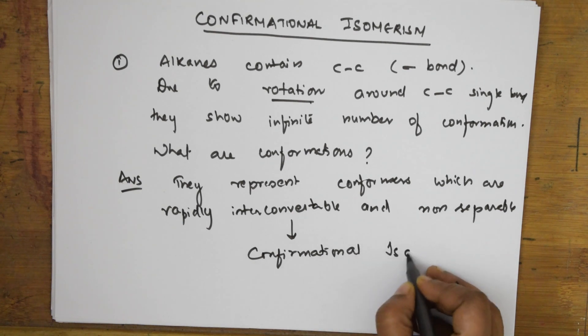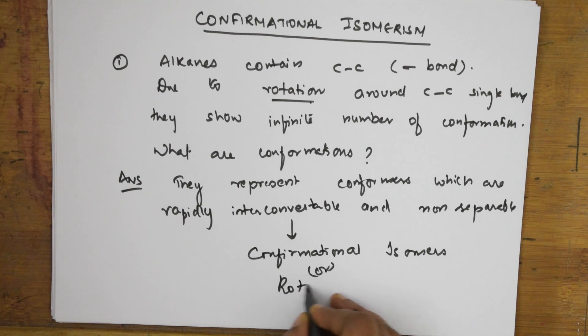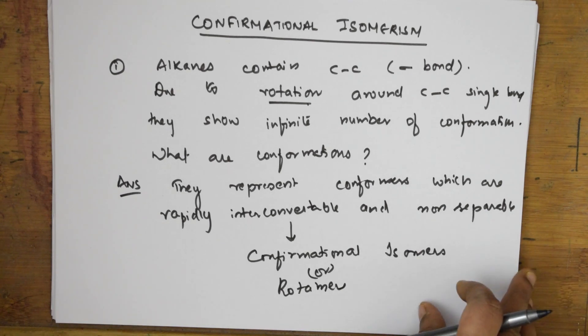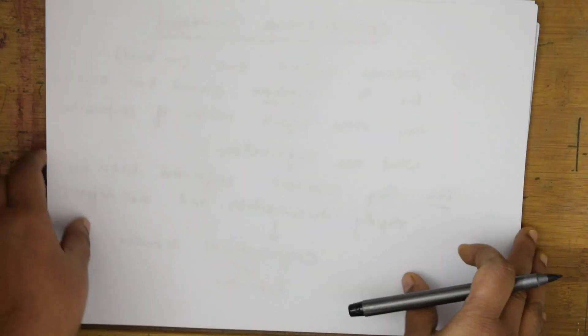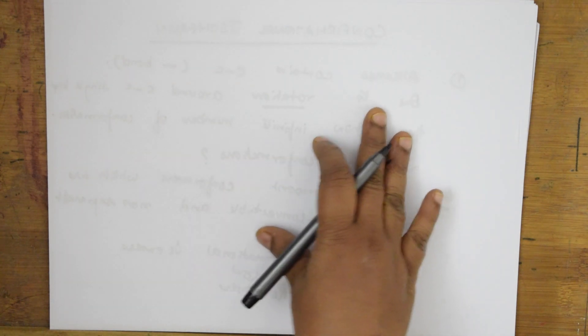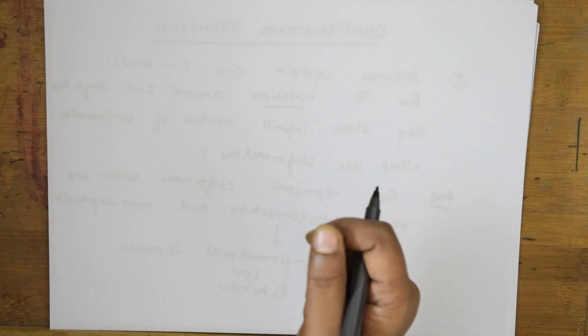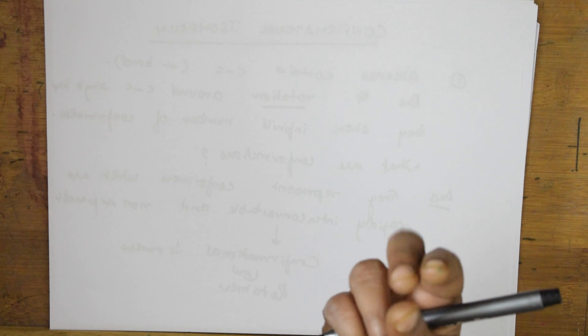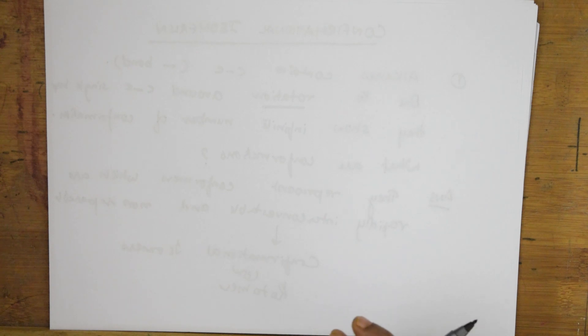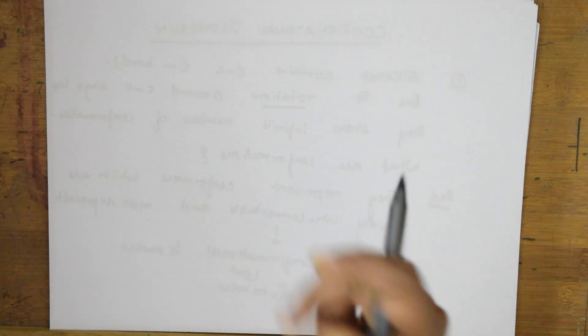Conformational isomers are also called rotamers. We will study conformations taking different examples of ethane, propane, and cycloalkanes. However, when we speak about rotation around the carbon-carbon single bond, it is not completely free. Why? Because a small energy barrier always exists — almost 20 kilojoules per mole — due to weak repulsive interactions between adjacent bonds. This repulsive interaction is called torsional strain.